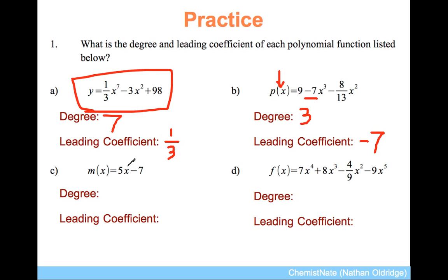Here, there are no exponents explicitly written, but this is x to the 1, and this constant is x to the 0. Therefore, the degree is 1. It is a linear function. And the leading coefficient is 5 because that's what's in front of x to the 1.